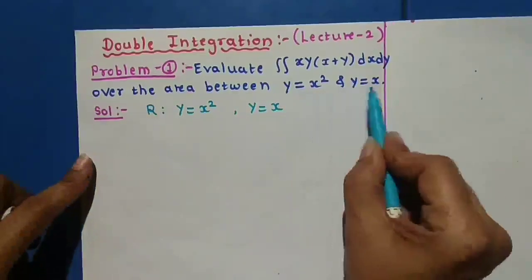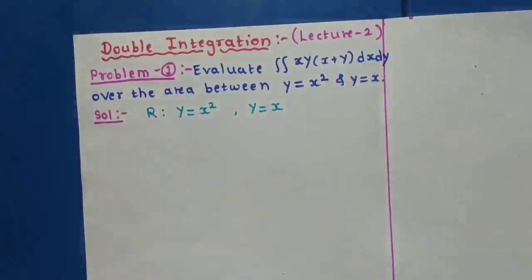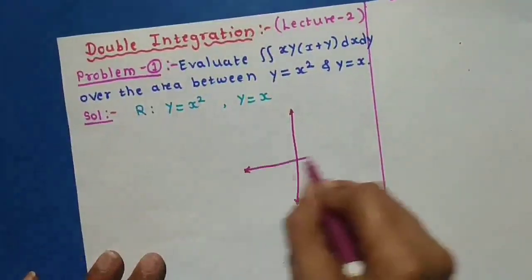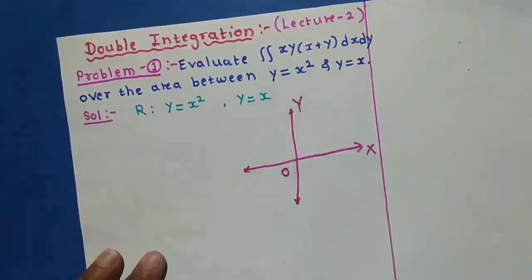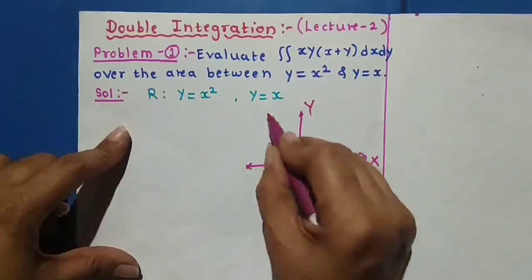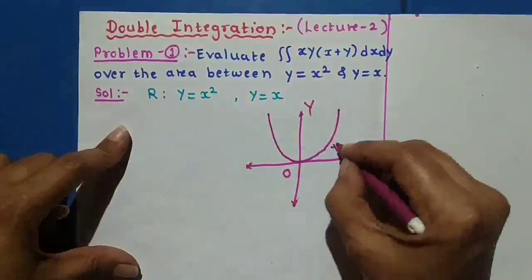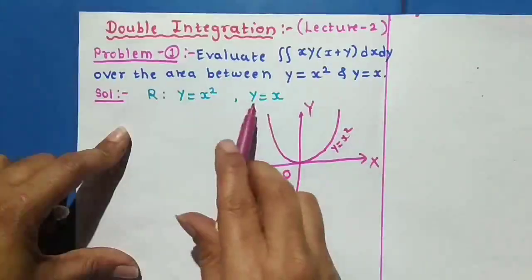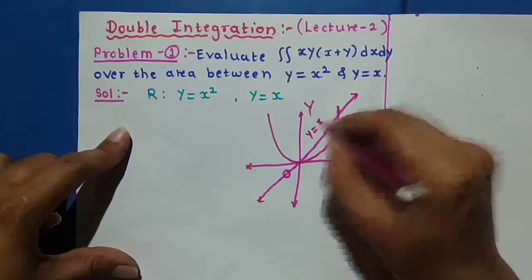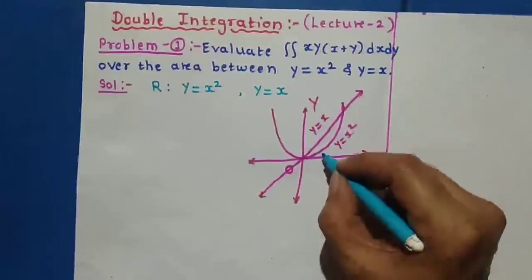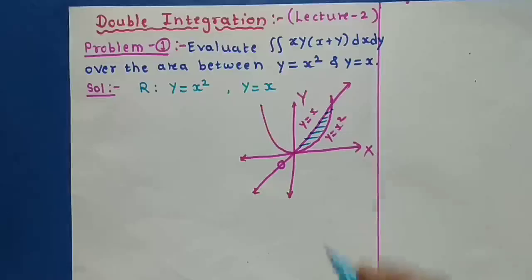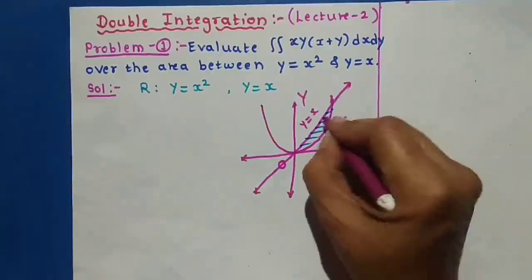Region R is bounded by y = x² and y = x. Let us draw this region. We draw the y-axis, then the x-axis, with the origin. The parabola y = x² is symmetric about the y-axis. The straight line y = x bisects the plane. The region bounded by these two curves is the shaded region between the straight line and the parabola — this shaded region represents our region of integration R.